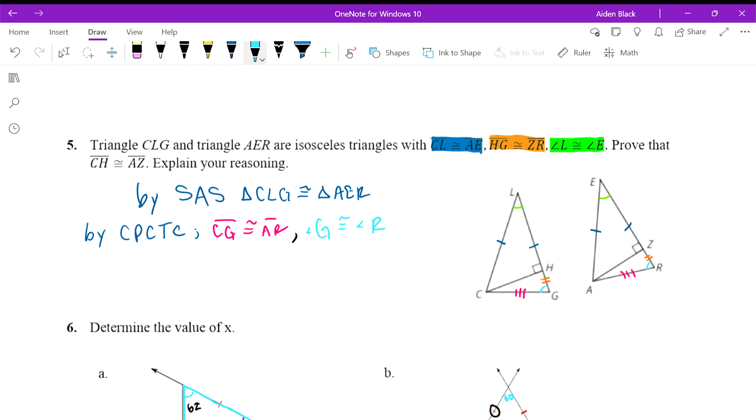We have enough information here to focus on these little triangles CHG and ARZ. We have Side-Angle-Side, so by SAS, triangle CHG is congruent to triangle AZR.